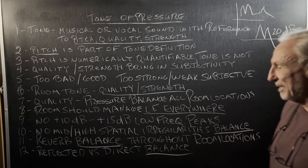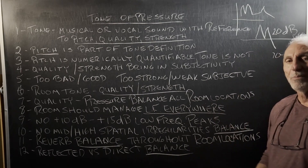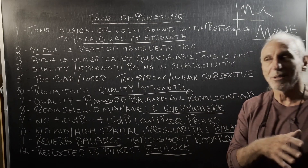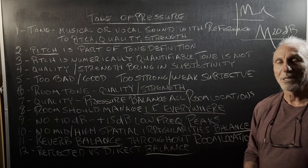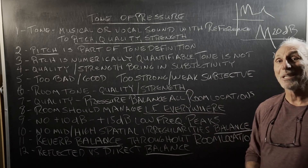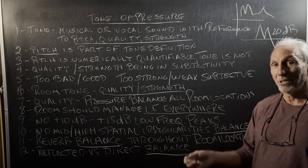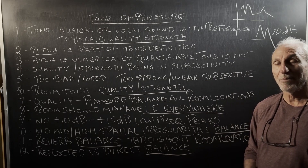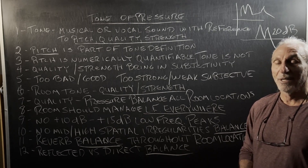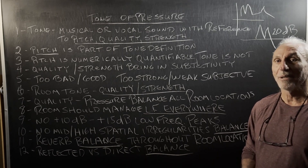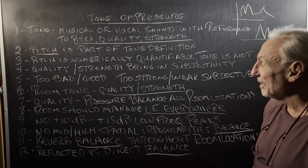Low frequencies must be balanced with the mids and highs. Reverb balance throughout the room is the same as pressure — you have to balance the reverb times throughout the room and make them consistent. Once you get all this done, then you can introduce diffusion. Pressure balance the room, reflection manage the room, get the reverb times managed correctly — then you're ready for diffusion. Diffusers act like a magnifying glass; they'll make your room sound worse if you don't have those criteria done first.